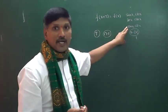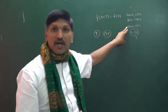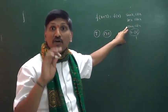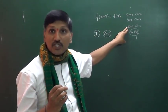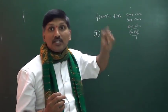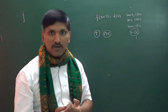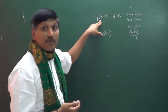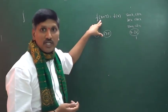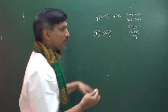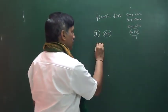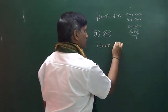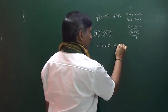If t is the period of a function, then nt is also a period of the function. For example, tan x is periodic with period π, but 2π, 3π, 4π are also periods. t is called the fundamental period. So if t is the period of a function, then nt is also the period, meaning f(x+nt) = f(x).